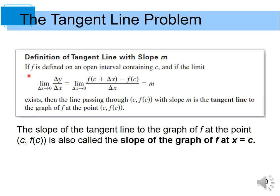If f is defined on an open interval containing c, and if the limit of delta y over delta x as delta x approaches zero is m, then the line passing through c with slope m is the tangent line to the graph of f at the point c. The slope of the tangent line to the graph of f at the point c is also called the slope of the graph of f at x equal to c.